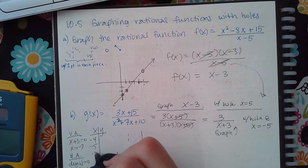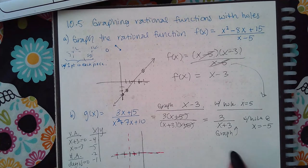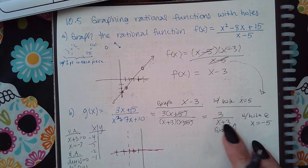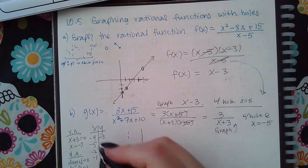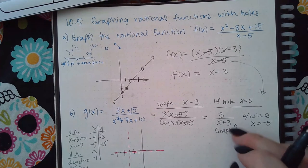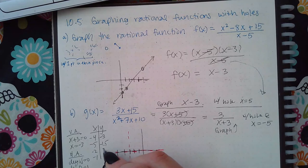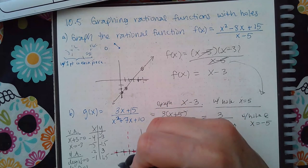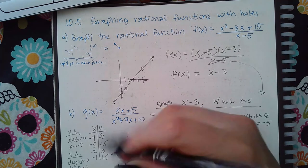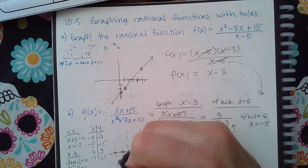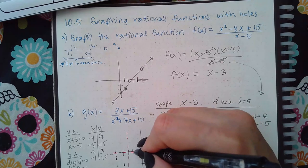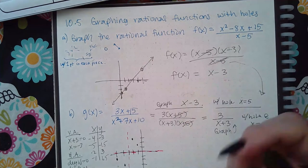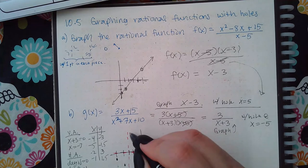Plugging into the simplified function: negative 4 gives negative 3, negative 5 gives negative 1.5, negative 2 gives positive 3, and negative 1 gives 1.5. Plotting those four points — (negative 4, negative 3), (negative 5, negative 1.5), (negative 2, 3), and (negative 1, 1.5) — will draw the graph.